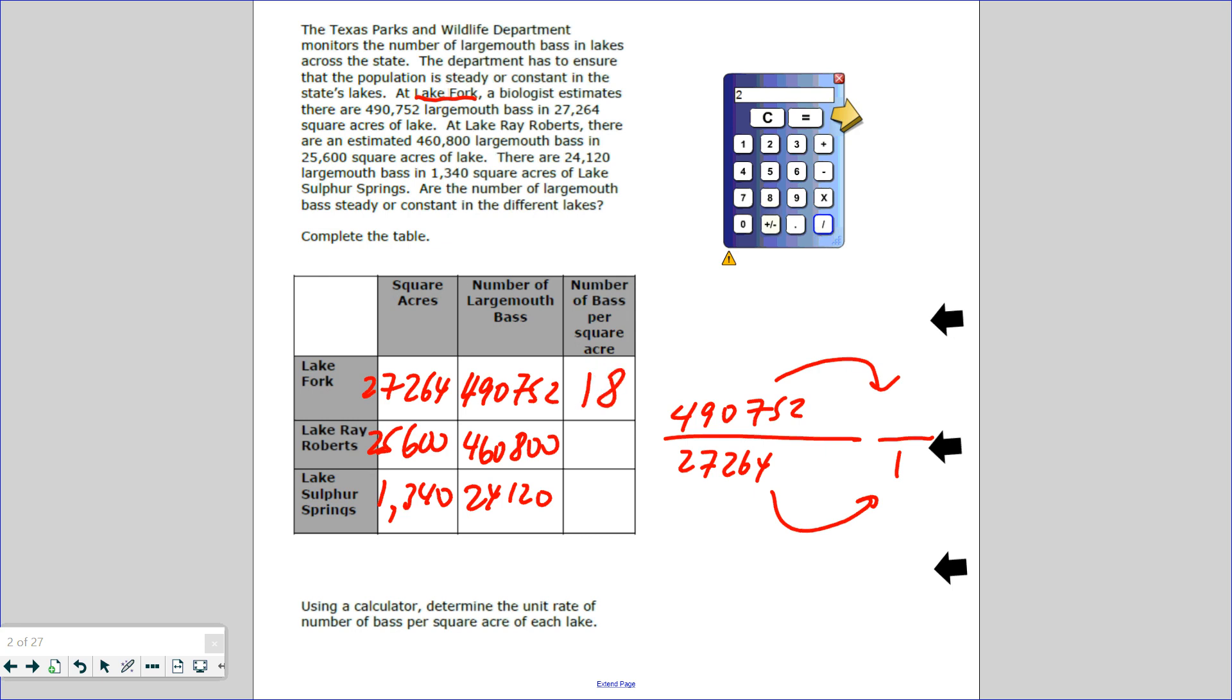So do unit rate. What operation will we do? Add, subtract, multiply, or divide? Well, we're going to divide because we're going to break it down per square acre. So we have 490,752 bass in 27,264 acres. How can I break it down to per acre, to one acre? I must divide by 27,264.